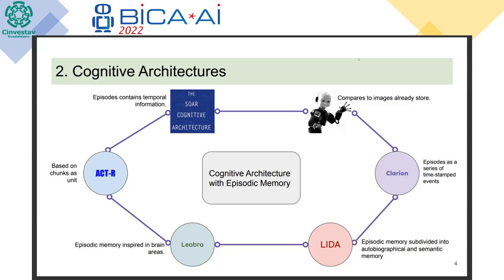Then we have LIDA, which is also trying to emulate cognition. LIDA has a lot of scenes with timestamps. LIDA has a declarative memory system that splits between autobiographical and semantic information — similar to episodic memory but without a specific episodic memory module. Clarion is an architecture inspired by psychology; it doesn't have brain areas but it has a definition of episodes that have timestamps.